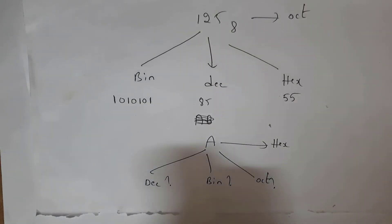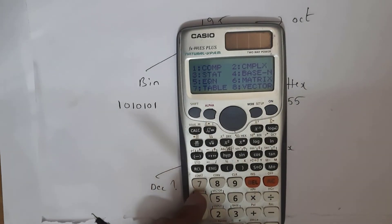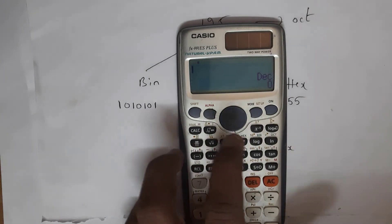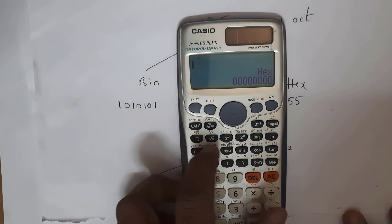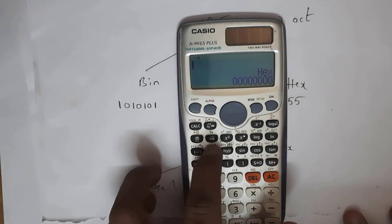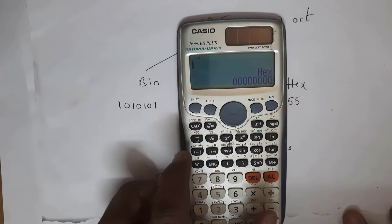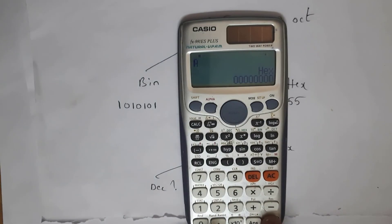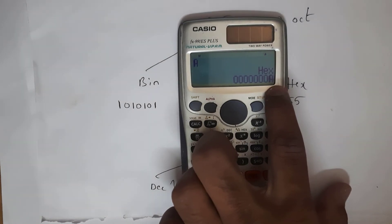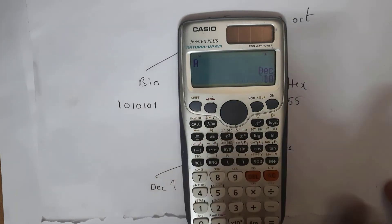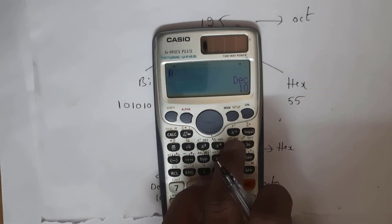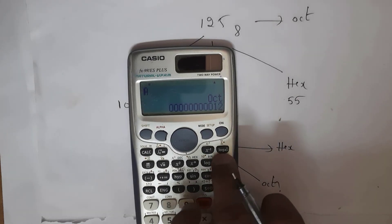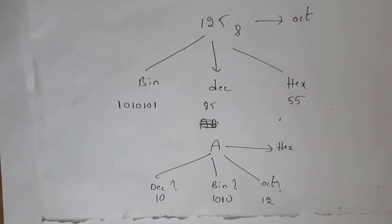Next, I will explain how to convert hexadecimal value A into decimal, binary, and octal. Click Mode, select option 4 (Base N). Select hexadecimal — you can see alphabets A through F, where A = 10, B = 11, C = 12, D = 13, E = 14, F = 15. Click A and press equals. Click decimal — answer is 10. Click binary — answer is 1010. Click octal — answer is 12. This is how we convert a hexadecimal number into decimal, binary, and octal.